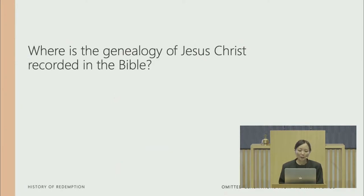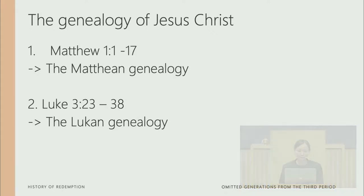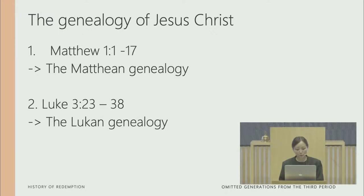Where is the genealogy of Jesus Christ recorded in the Bible? You can find it in two places. The first record is in Matthew chapter 1, verses 1 to 17, also called the Matthew genealogy. The second place is in Luke chapter 3, verses 23 to 38, also called the Lucan genealogy.